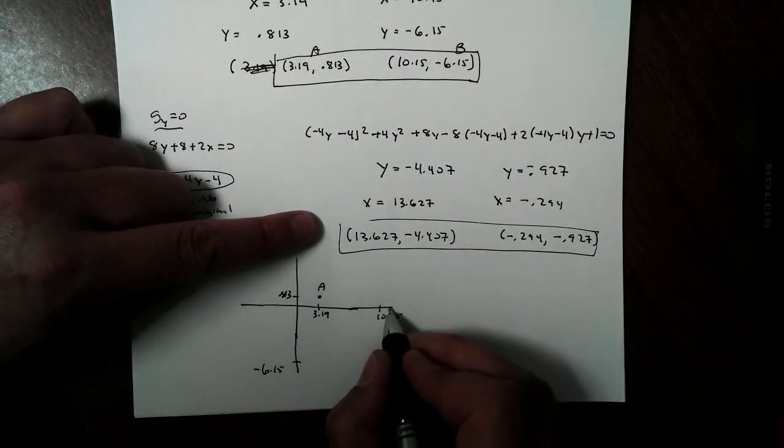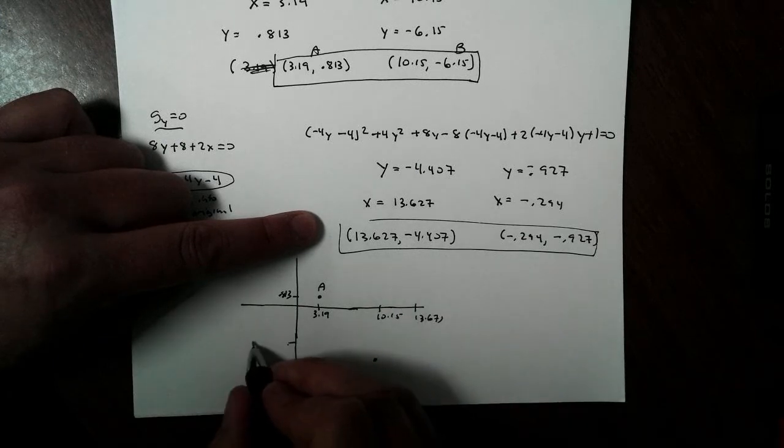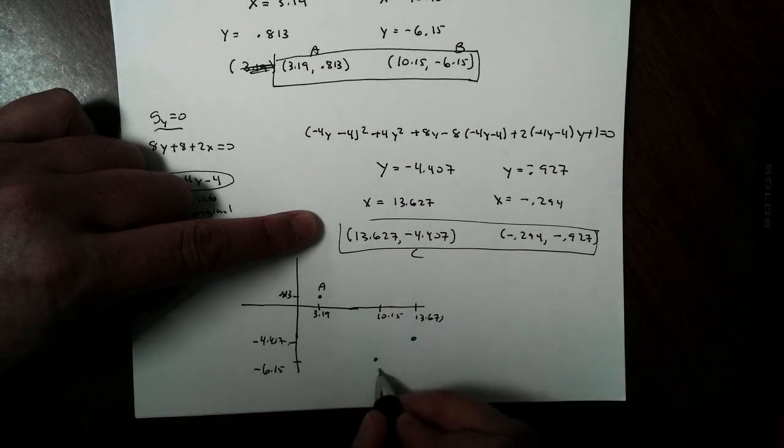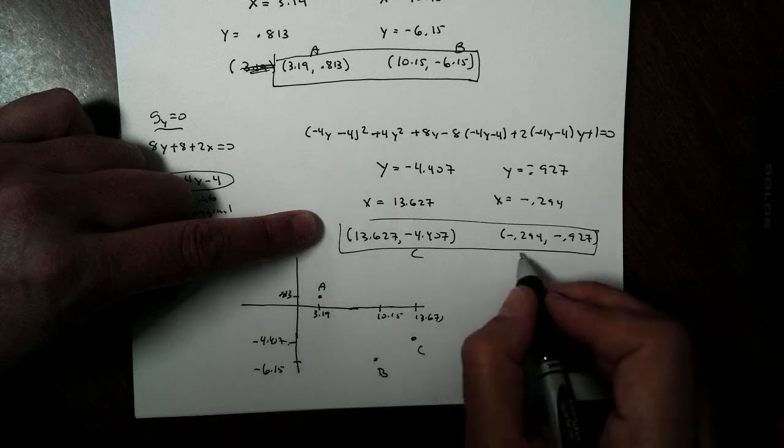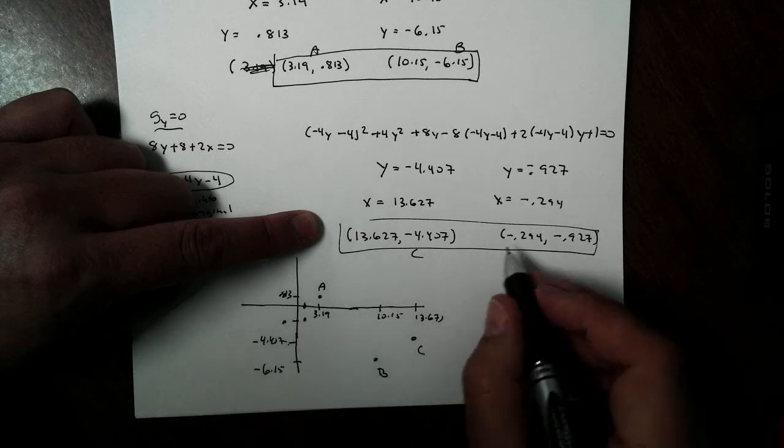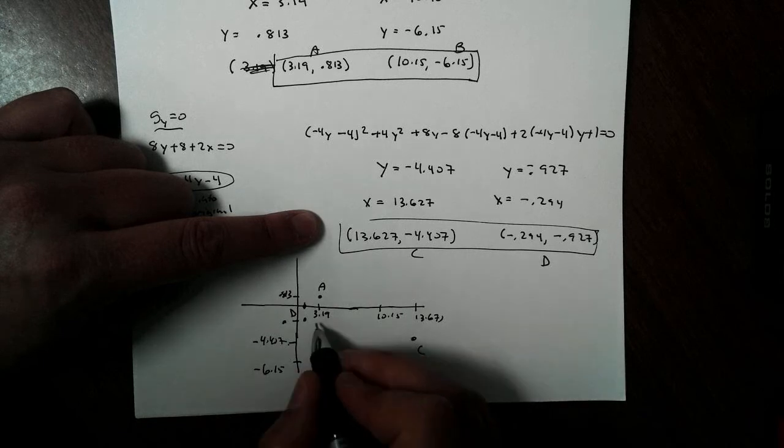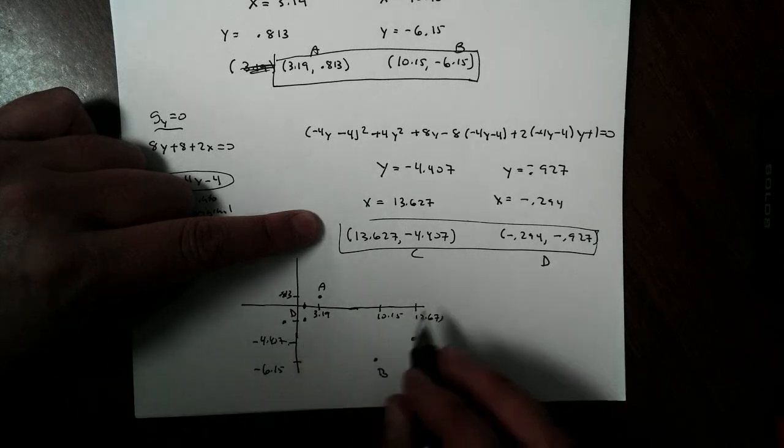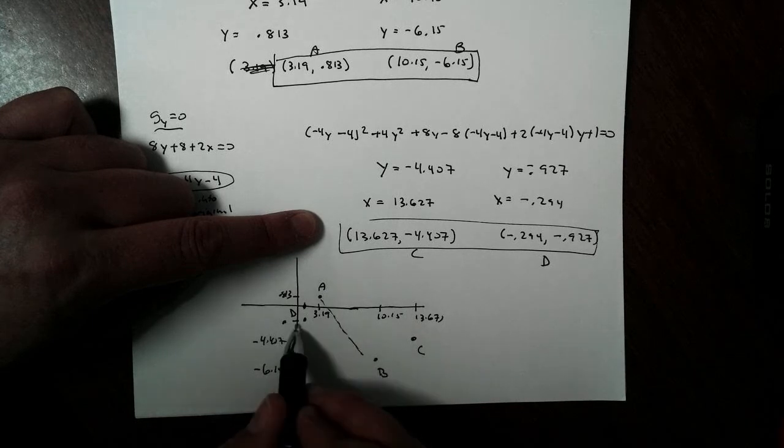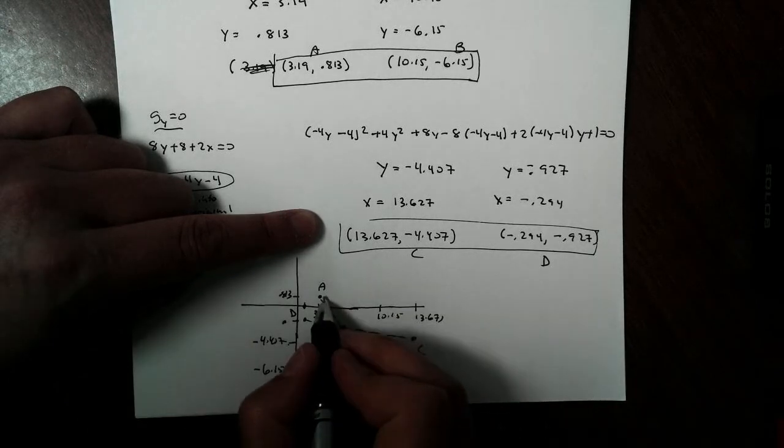Over here, 13.627, negative 4.407. Nothing drawn on scale. We'll call that point C. And over here, negative 0.294 and negative 0.927. Point D. I can get my center. It's going to be kind of where they meet. If you go down and cross right here, you can get your center.